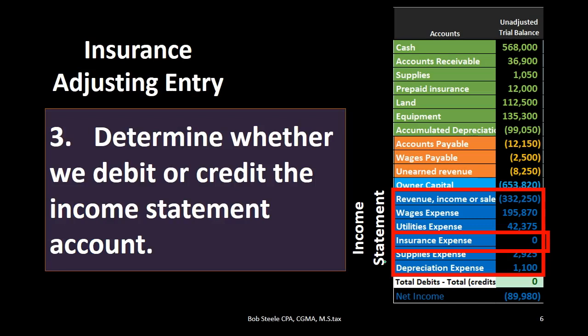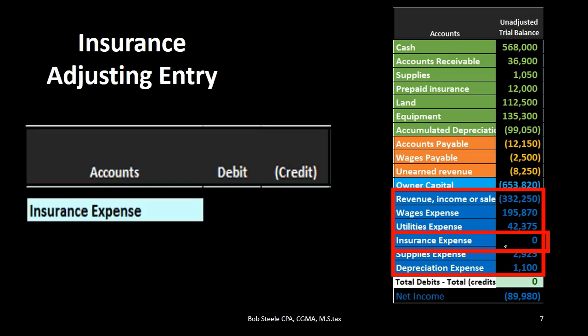Step three: determine whether we debit or credit the income statement account. Now that we know the two accounts, we focus on the income statement account first — because income statement accounts only go in one direction. If we're dealing with a revenue account, it's going to be credited because revenues always go up in the credit direction. If it's an expense, it's always going to be debited because that's what we do to expenses — they just get debited. So we know this is an expense, therefore we debit it. That's why we focus on the income statement account first, then start constructing the journal entry.